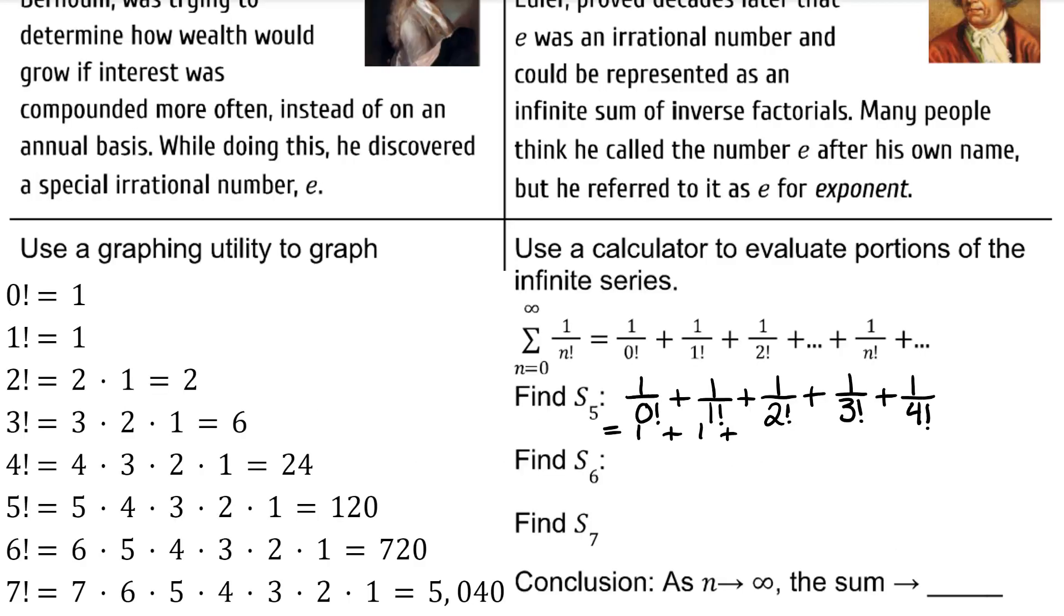Use a calculator to add these five fractions, but I'm also going to show you the intermediate simplification, which is 2.70833333. To find the sum of the first 6 fractions, I would add the first 5 fractions to the 6th fraction, which is 2.7166666 repeating.